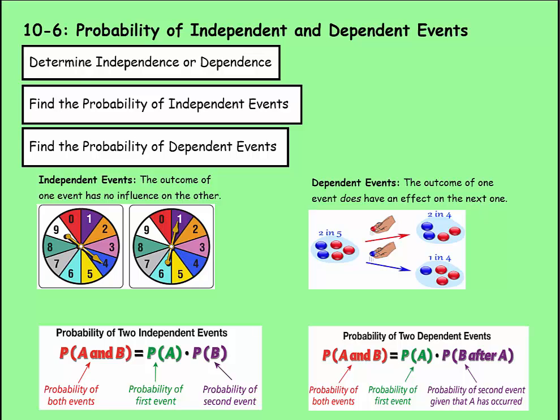We're on Lesson 6 of Chapter 10, which is the Probability of Independent and Dependent Events. First, we're going to determine independence or dependence. Then we're going to find Probability of Independent Events. Then we'll find the Probability of Dependent Events.